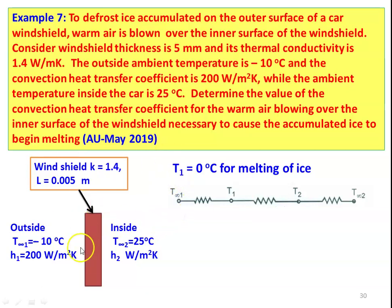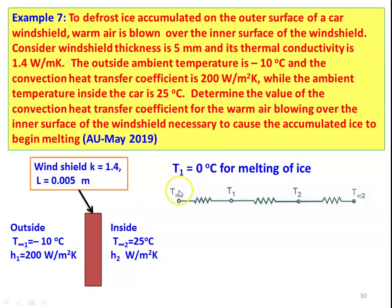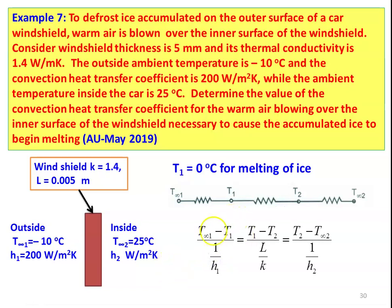Setting up the heat flux equation with area = 1 m²: (T∞1 − T1)/(1/h_o) = (T1 − T2)/(L/K) = (T2 − T∞2)/(1/h_i). Substituting: (−10 − 0)/(1/200) = (0 − T2)/(0.005/1.4). The left-hand side gives −2000, and the right-hand side gives −280·T2. Therefore T2 = 2000/280 = 7.143°C.